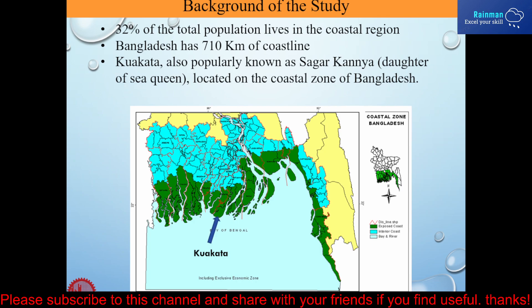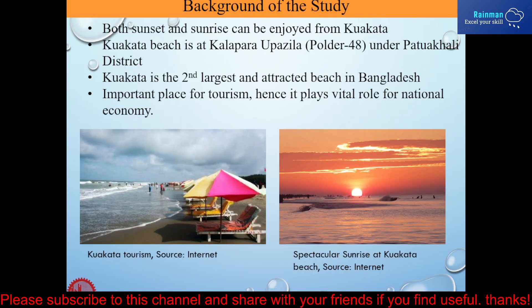We all know Bangladesh is a mass populated country. About 32% of people live in the coastal region. Bangladesh has a long coastline of about 710 kilometers, so it is of paramount importance to protect the coastal belt from natural hazard. I have chosen Kuakata for my thesis work because it is a very important tourist place after Cox's Bazar in Bangladesh.